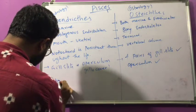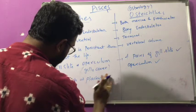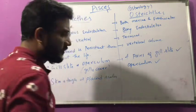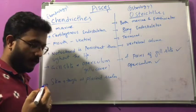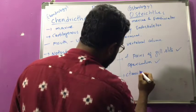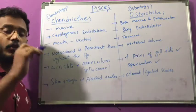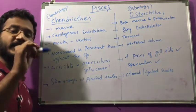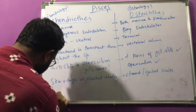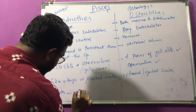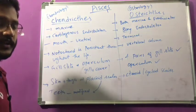In Chondrichthyes, the skin is very tough and they have placoid type scales. There are different types of scales — placoid, ganoid, tenoid, cycloid — named according to their shape. Osteichthyes have tenoid or cycloid scales. In Chondrichthyes, the teeth are actually modified placoid scales — the placoid scales are modified into teeth.